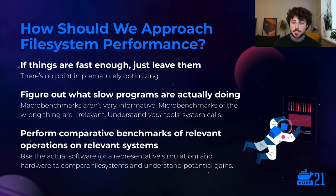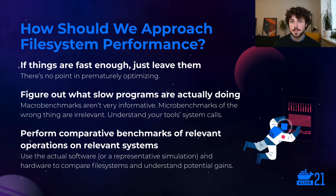How should we approach file system performance from a development perspective? If things are fast enough, just leave them — there's no point in prematurely optimizing. But if you have a performance issue, try to understand exactly what's happening under the hood in terms of low-level system calls, maybe do some profiling, and understand how tools are hitting the file system and if the file system is actually the bottleneck. Then perform comparative benchmarks of relevant operations on alternative file systems that you want to assess.